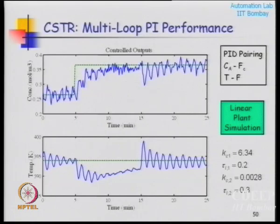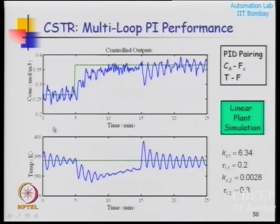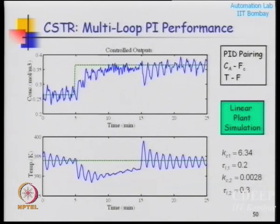In this more realistic experiment, I give a set point change at k equal to 50 and a step disturbance at k equal to 150. The controller must reject the disturbance and move the system to the new set point. The simulation includes measurement noise and unknown inputs to make it realistic.